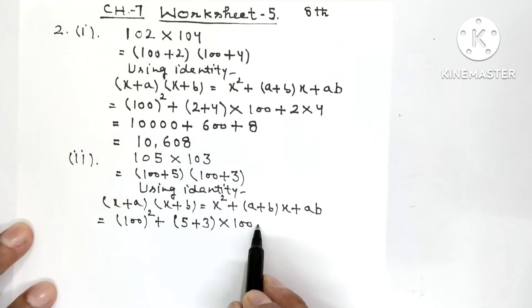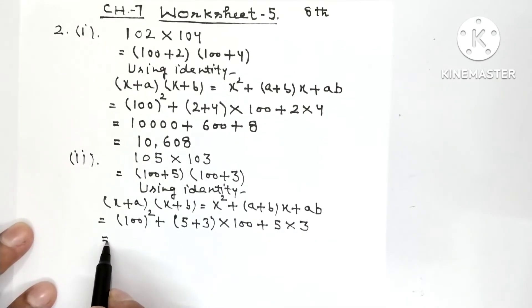Plus 5 multiplied 3. So 100 square is 10,000 plus 5 plus 3 is 8, 8 into 100 is 800, plus 5 × 3 is 15.